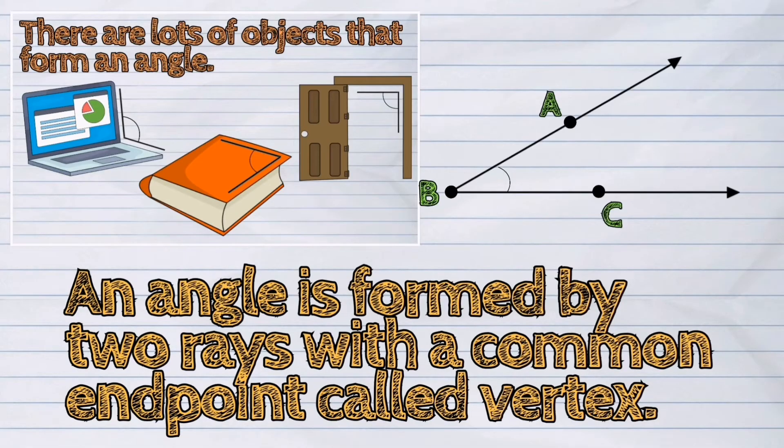An angle is formed by two rays with a common endpoint called vertex.